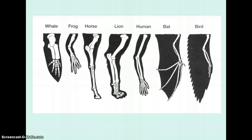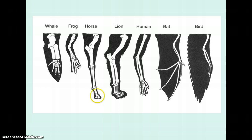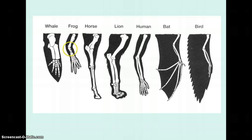Another diagram shows the same concept with a few extra examples. In birds, some bones have been fused together. In the horse, the phalanges have been fused into a hoof. Frogs have fewer phalanges, and instead of a separate radius and ulna, they have a fused radio-ulna bone.